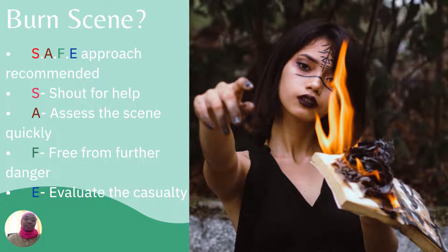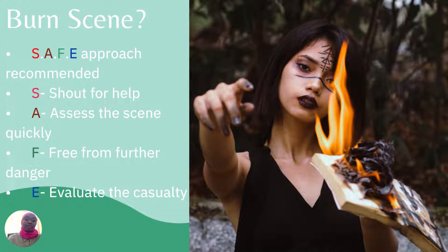What happens at a burn incident scene? The person is up in flames, or has been burnt by hot boiling water or hot boiling oil. What do you do? Always take the safe approach — S-A-F-E. Remember: S — shout for help so that you can get some assistance. A — assess the scene quickly to ensure that there are no other things endangering you, and assess all things that could lead to the patient being better or worse. F — proceed to a nearby place close to the patient. And E — evaluate that casualty as soon as possible.